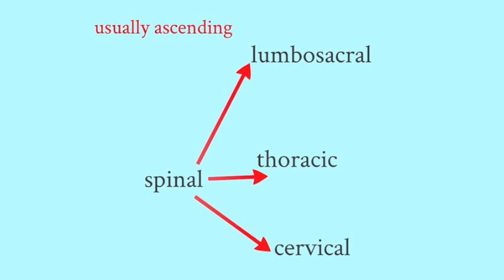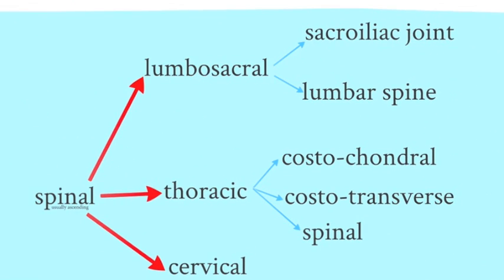Sometimes lumbosacral involvement is not symptomatic and the patient comes with symptomatic thoracic spine involvement and there's evidence of preceding asymptomatic lumbosacral disease. In the lumbosacral involvement, the sacroiliac joints are usually the area first involved, then there's lumbar spine involvement. Thoracic spine involvement has three elements: the costochondral junctions anteriorly, the costotransverse joints posteriorly, and the spinal elements. Costochondral and costotransverse involvement may give chest pain that is different from spinal pain.